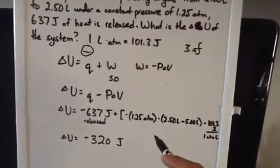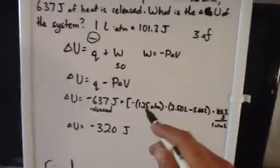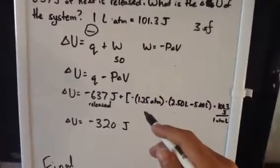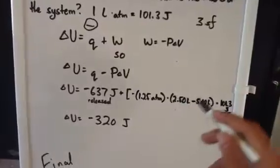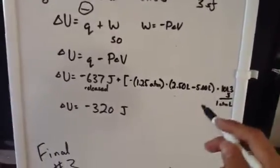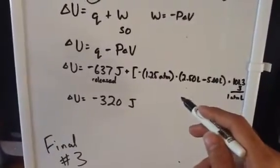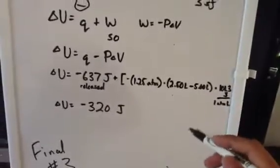We have 1.25 atmospheres. Of course we have a negative here because it's negative P change in V. So we have 1.25 atmospheres times the change in volume—that's 2.5 liters minus 5 liters. Our answer here will be negative whatever atmospheres times liters, or liters atmospheres.